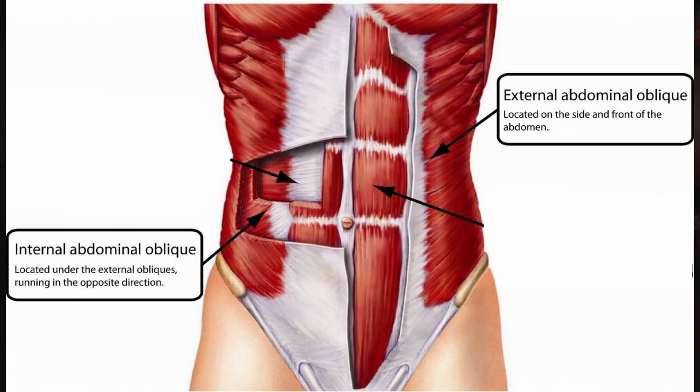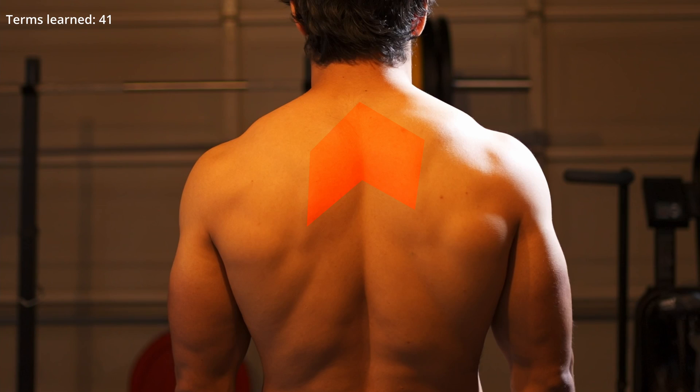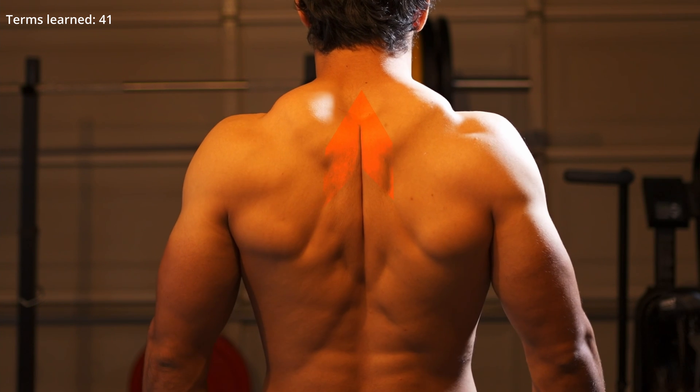The obliques — internal and external — do twisting and flexion. Small but fairly important are the rhomboids, which are between the scapula and pull the scapulae together. The scapula is sort of the bone that holds the shoulder — it kind of is the shoulder. When people talk about the shoulder girdle or shoulder complex, they're referring to the shoulder, the scapula, and the AC joint.